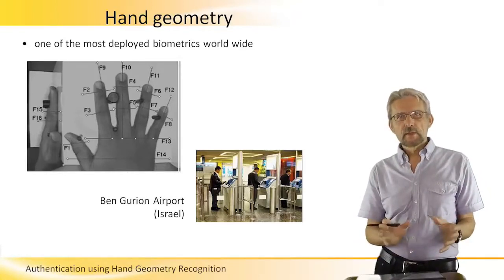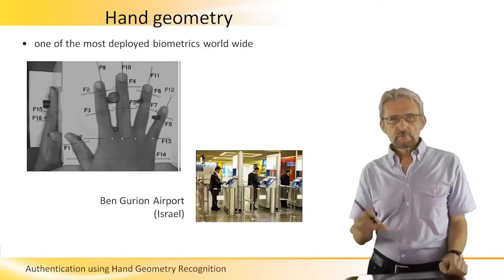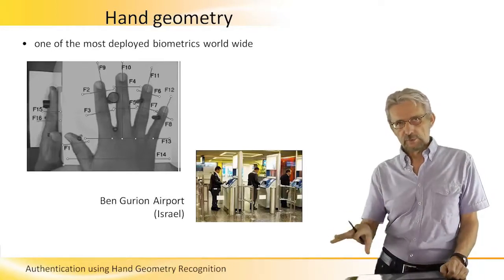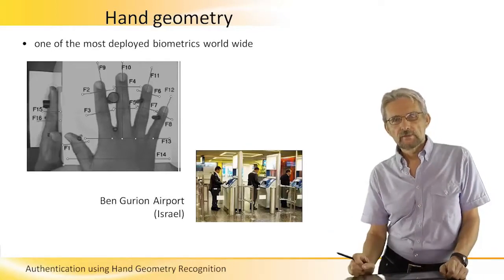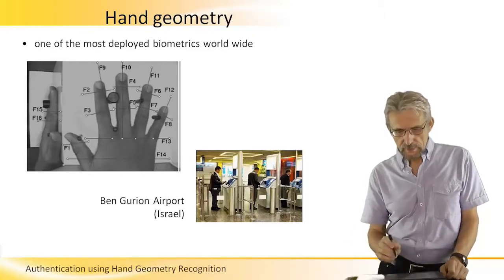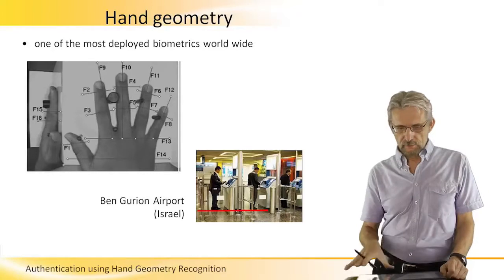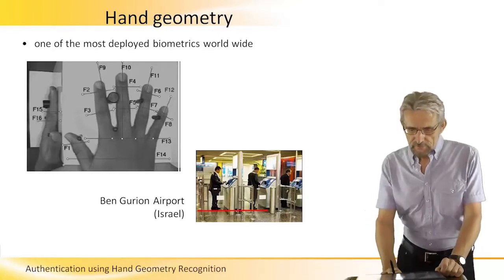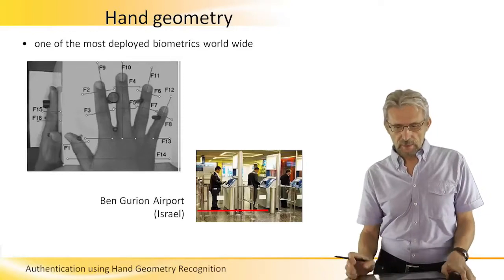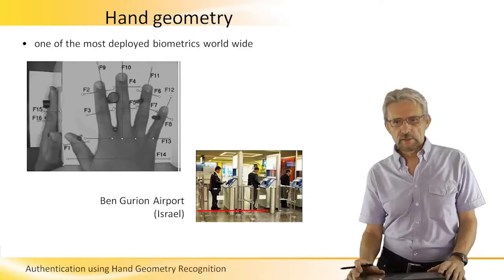It's a pretty simple set of geometric measurements which are stored in the database, and that is then used to compare and verify when you present your hand for identification. As you can see, here is a picture of Ben Gurion Airport where it's being used for identifying passengers. It's a very common and widely used method for identification.